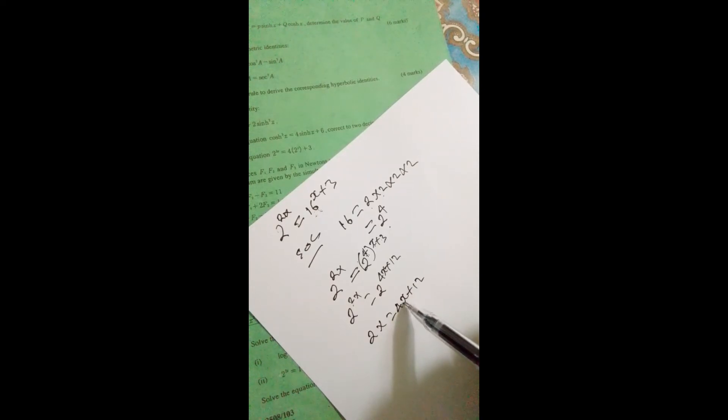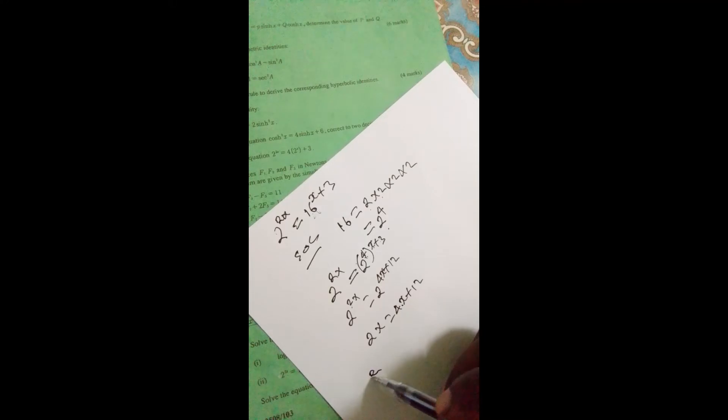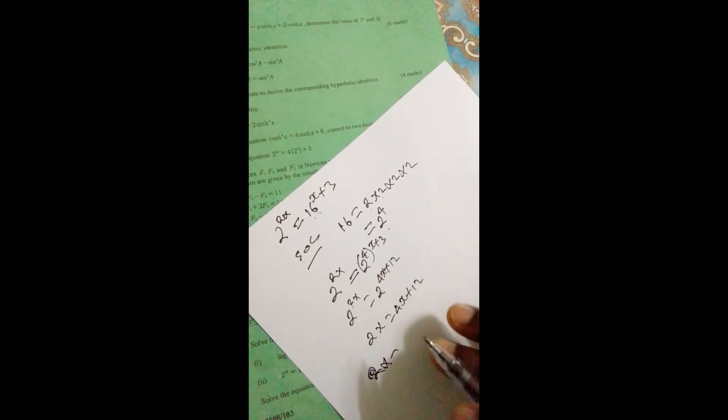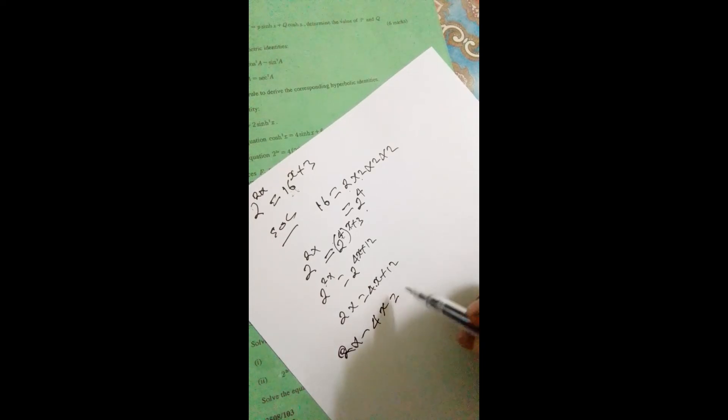Now the 4x crosses the equal sign, so we have 2x minus 4x equals 12.